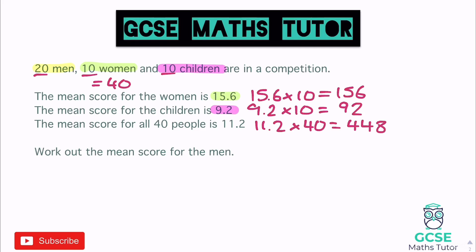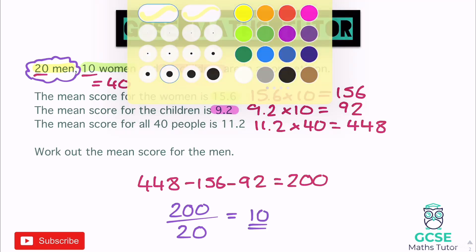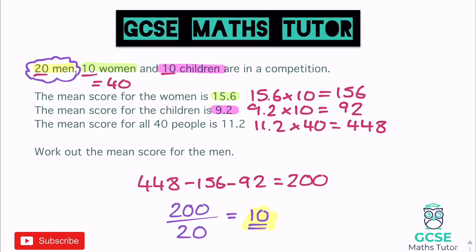We've got the overall total of 448 and the women and children's totals. To find the total for the men: 448 take away 156 take away 92 leaves us with 200. That's the total for the men. There are 20 men, so we divide 200 by 20, which gives us a mean of 10. There's the final answer. Multiply the mean by the number it relates to, use logic to find any missing totals, then divide to get the mean.